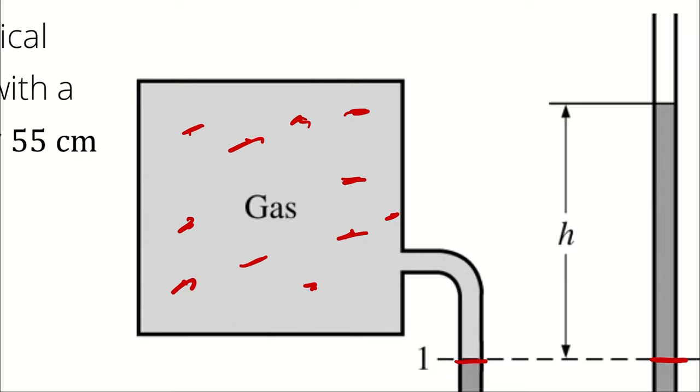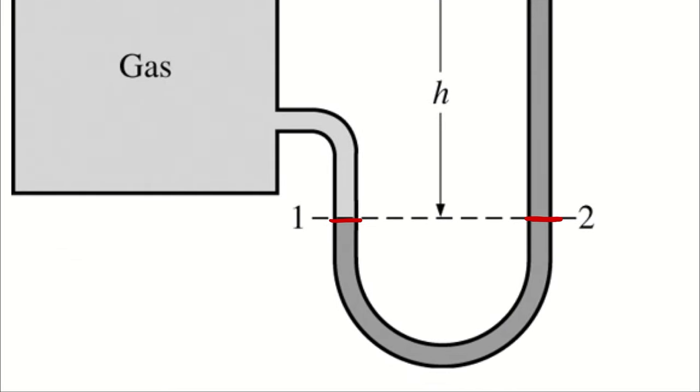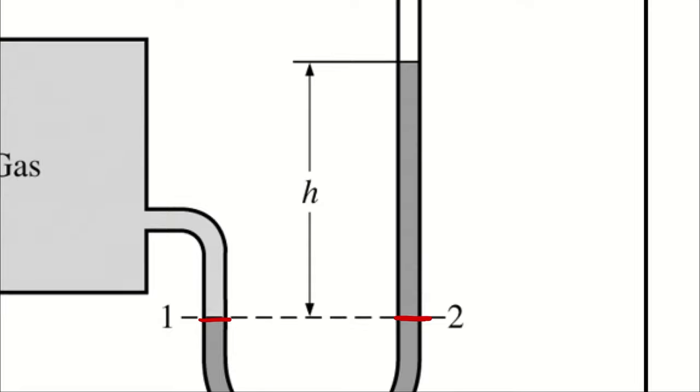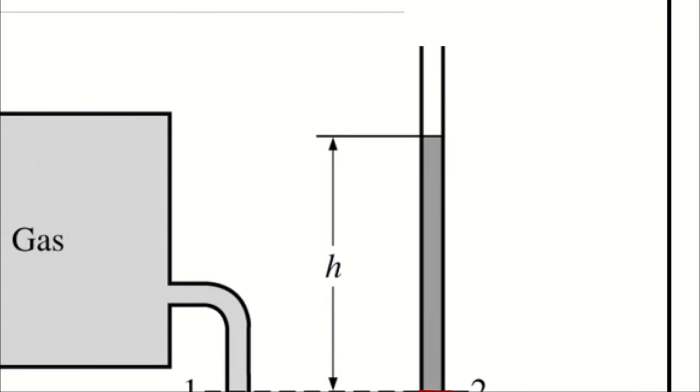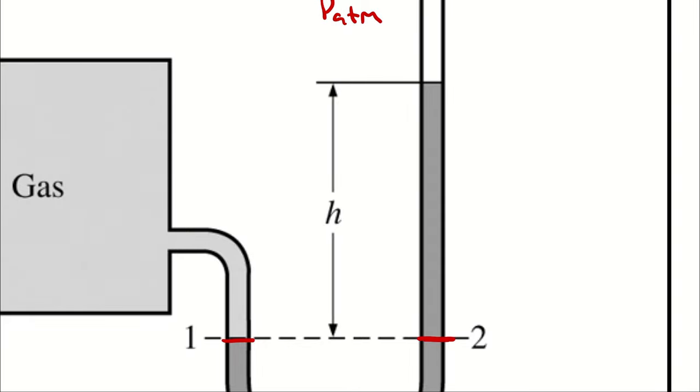Because of that assumption, I can write the pressure of our gas is going to be equal to the pressure at state 1, which is equal to the pressure at state 2. So this problem really just becomes, how do I get from an atmospheric pressure up here down to the pressure at state 2? Remember that this pressure difference caused by the height of that column of fluid can be described using the ρgh equation.